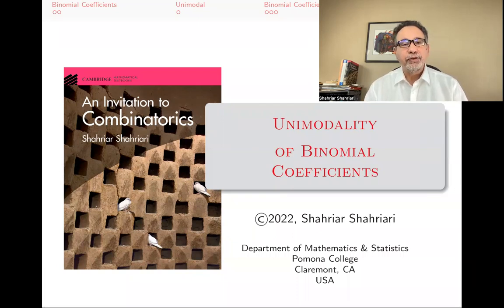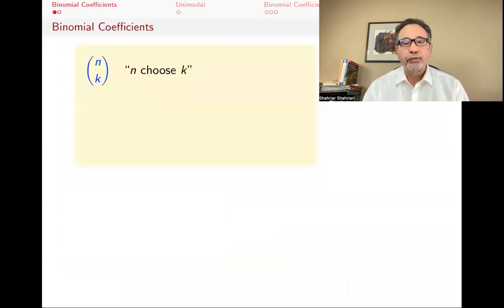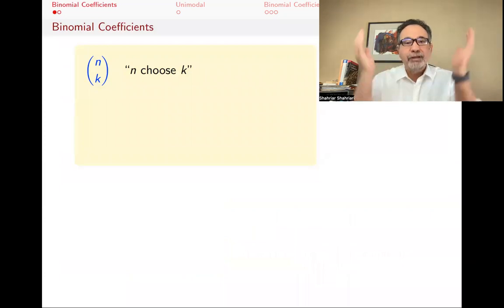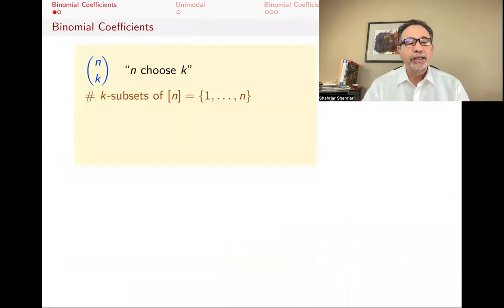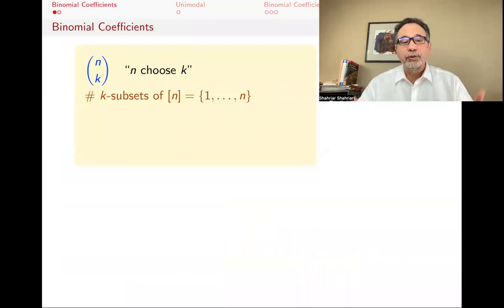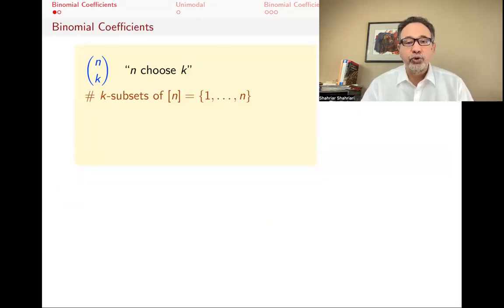The purpose of this lecture is unimodality of binomial coefficients. Let me first remind you what binomial coefficients are, and then we'll talk about unimodality. We use the notation n choose k — a parentheses n over k — to mean the number of k-subsets of a set with n elements, the number of subsets of size k. The set with n elements we usually use is {1, ..., n}, but any set with n elements would have the same count of size-k subsets.